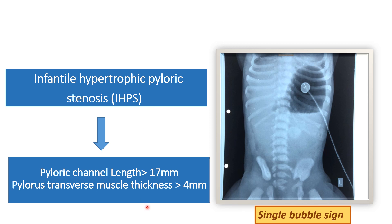The parameters for diagnosis: whenever there is a length more than 17 mm and the transverse muscle thickness more than 4 mm, it is suggestive that the patient is suffering from pyloric stenosis.